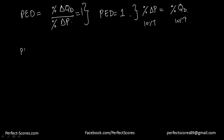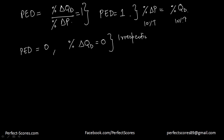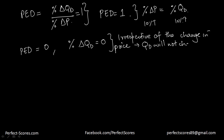Now let's suppose price elasticity of demand is equal to 0. This happens when the percentage change in quantity demanded is equal to 0. That means I can keep on changing the price whichever way I want — the quantity demanded will just not change. Irrespective of the change in price, the quantity demanded will not change.